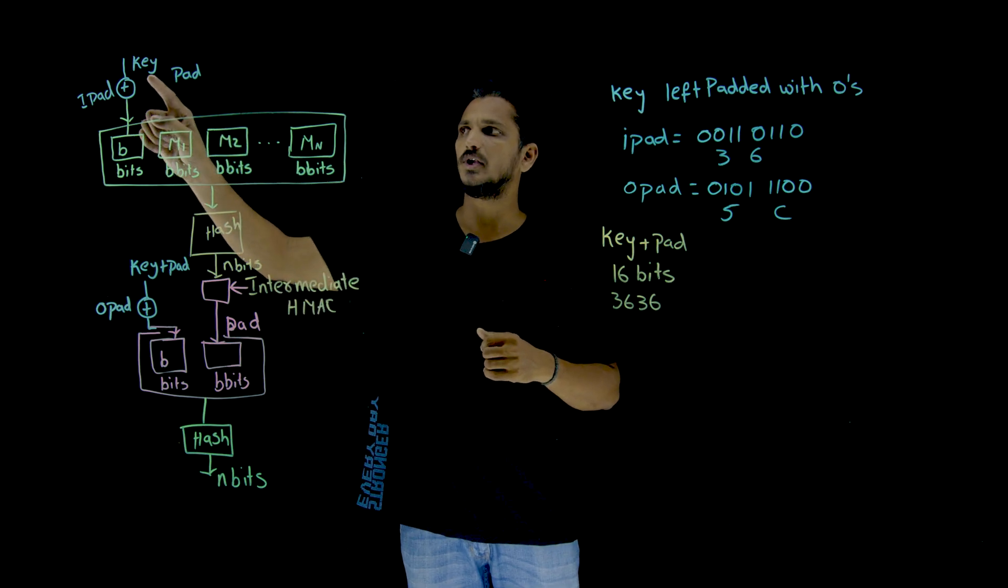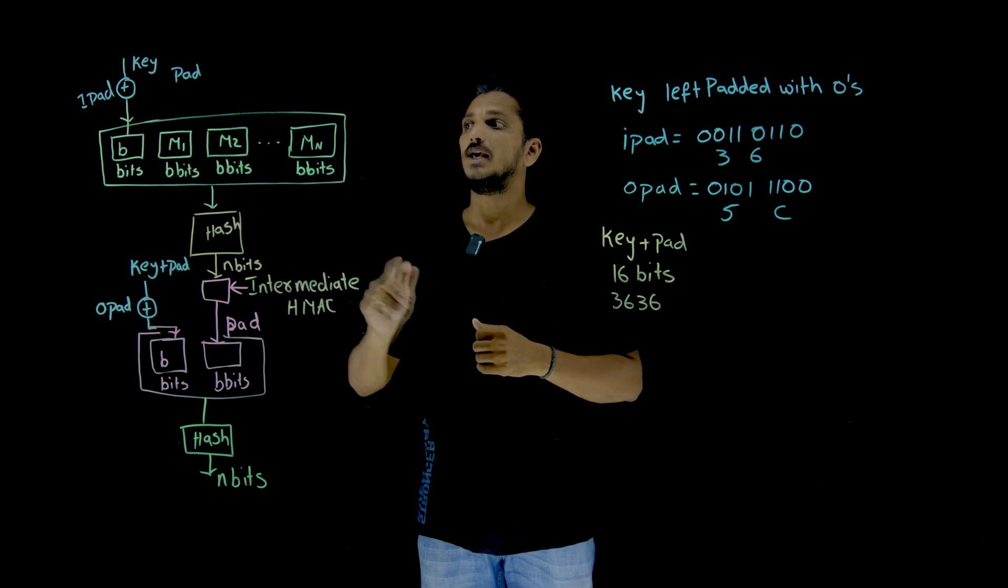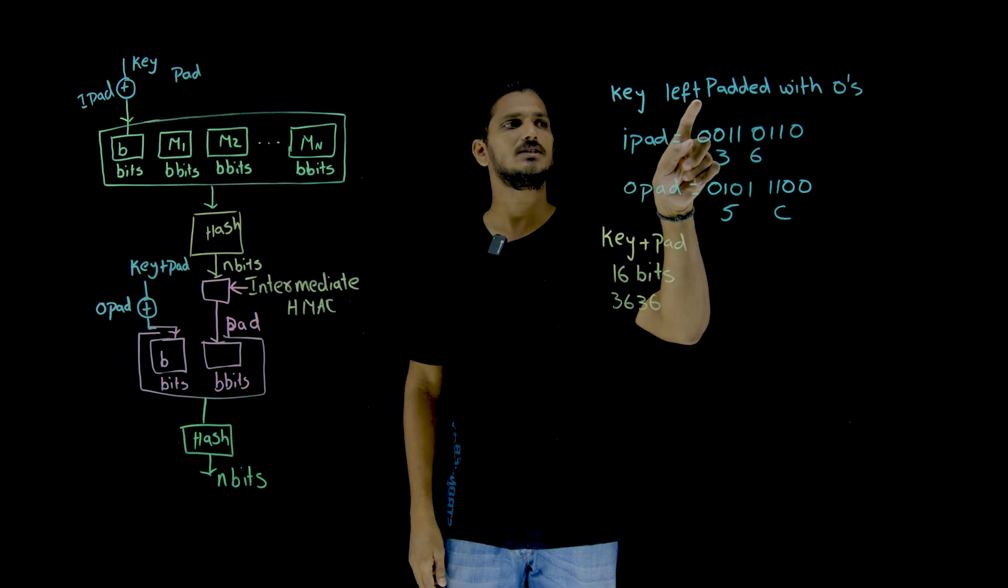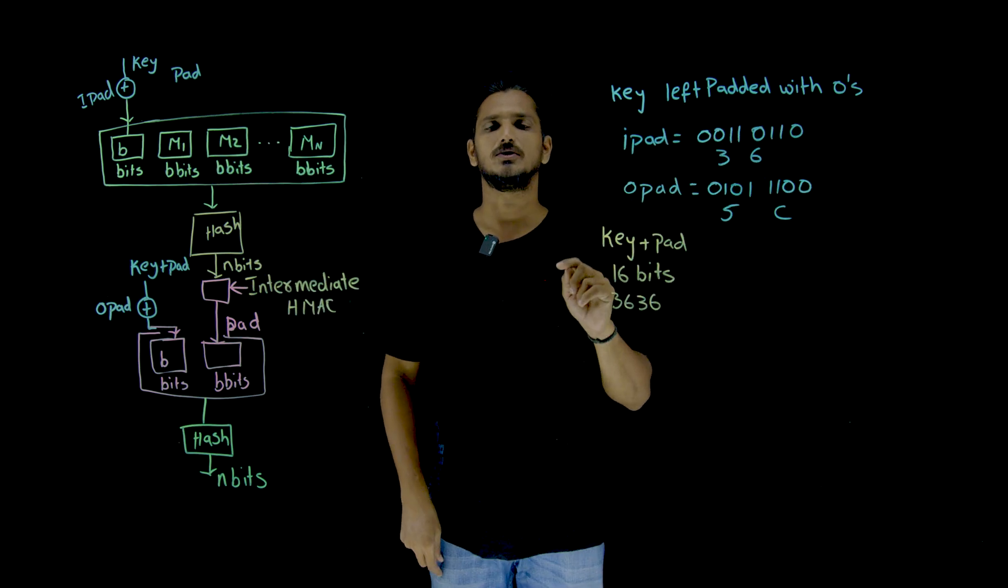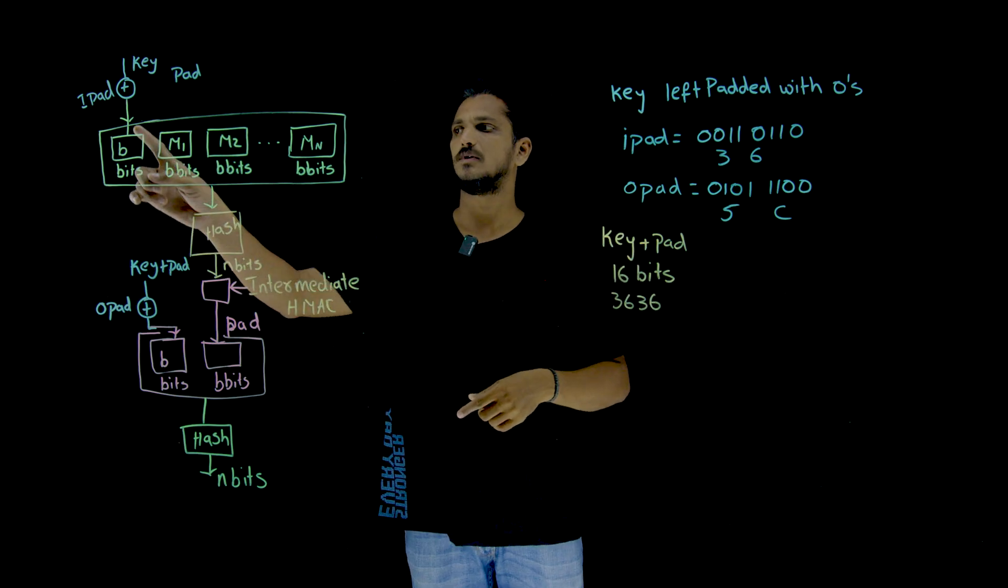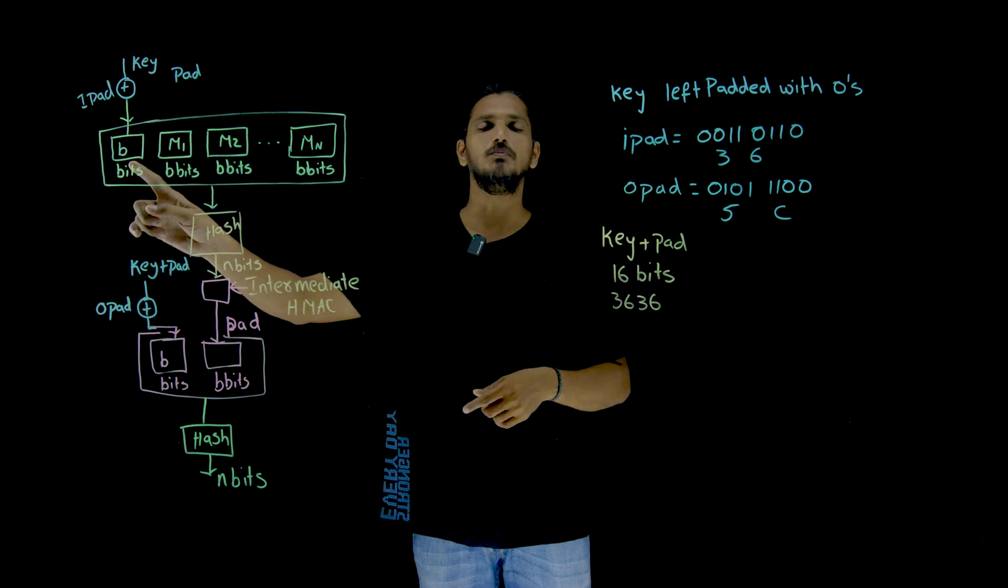So we are going to divide our message into n blocks. Each block contains b bits. And we are going to take our key value. Key is padded with zeros. Key is left padded with zeros and make it b bits.